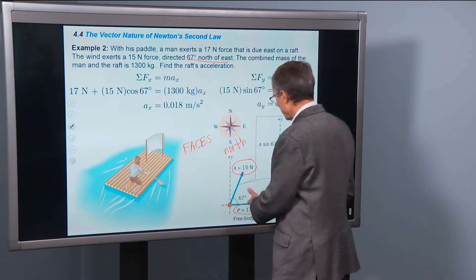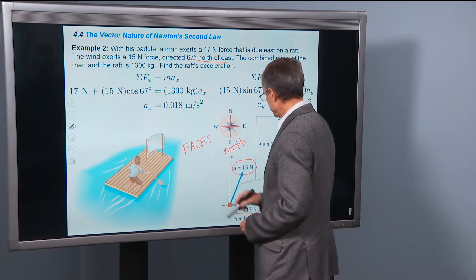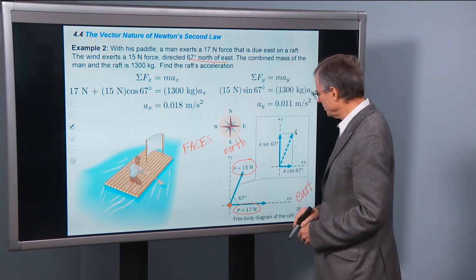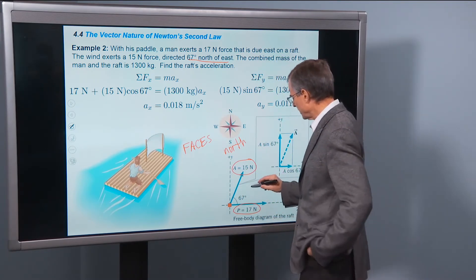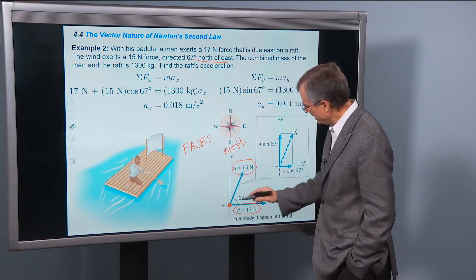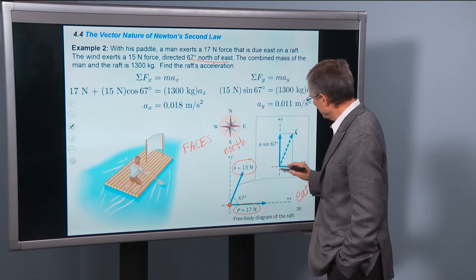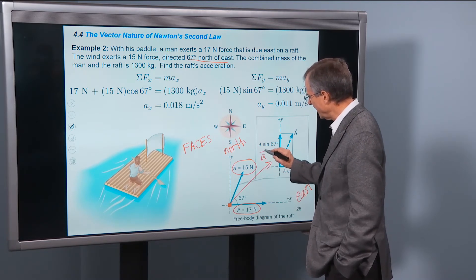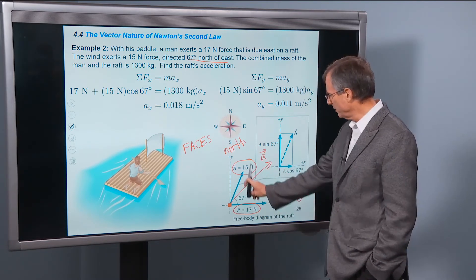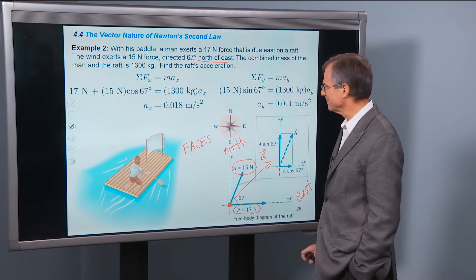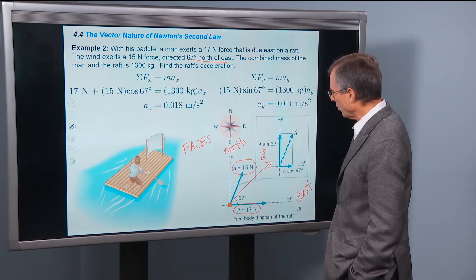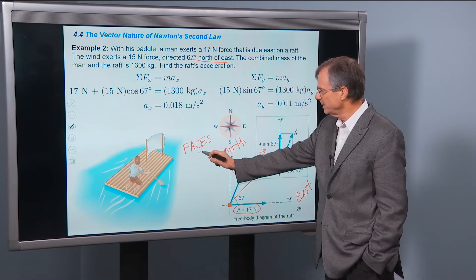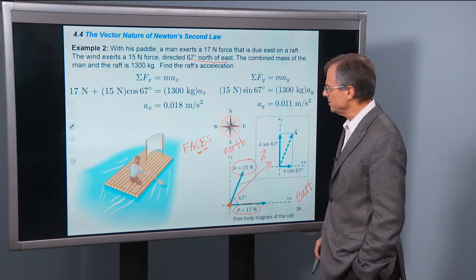FACES: forces, we've got them. The acceleration. Well, we don't know exactly what direction the acceleration is going to be in. But the net force is going to be somewhere off in this direction. So we're going to guess that the acceleration will be somewhere intermediate between these two forces. The coordinate system, we've already chosen. We're good there. Equations. Let's do that now.